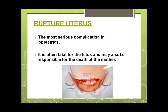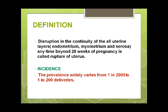The next most important and life-threatening complication for the mother is uterine rupture — the most serious complication in obstetrics. It is often fatal for the fetus and may also be responsible for the death of the mother. The most important risk in our social context is when a grand multipara is given injudicious use of prostaglandins, misoprostol, or oxytocin during labour, or a lady with a previous cesarean section is given a trial of labour that is unattended and unobserved.